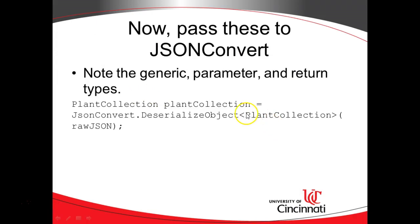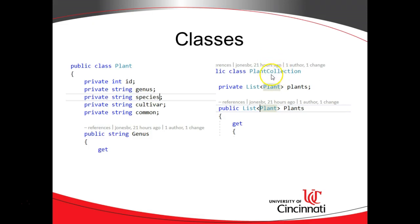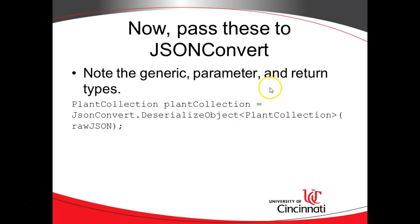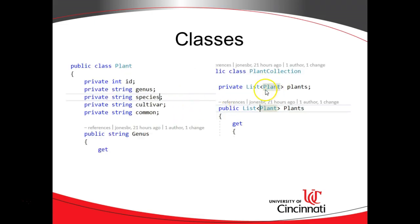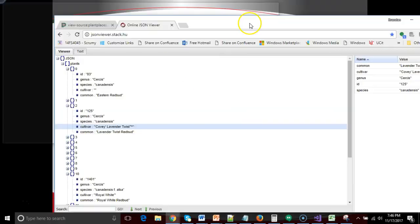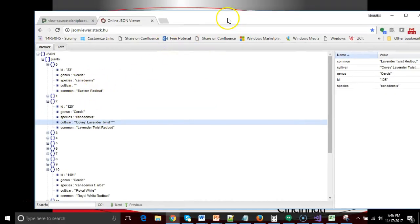The generic, PlantCollection, is the class that owns the list of plants. So what we're saying is: take the raw JSON string, parse it out, populate it into an object of type PlantCollection, and save that into the variable called plantCollection. After this line executes successfully, plantCollection is populated with a list of plants — specifically the list of plants returned from our JSON stream.